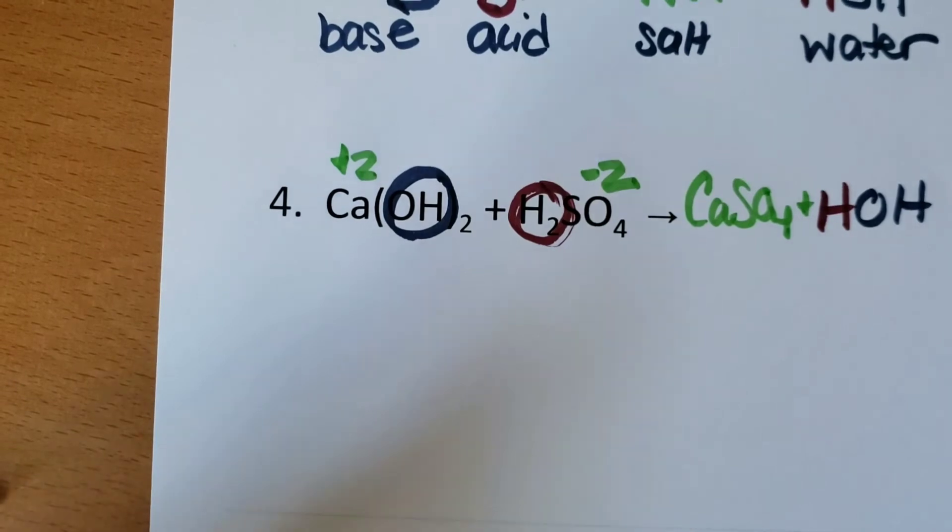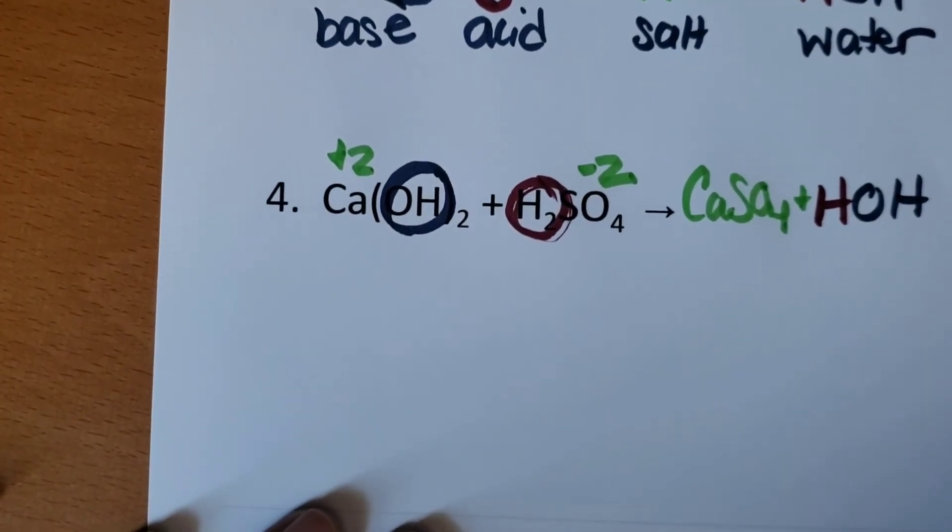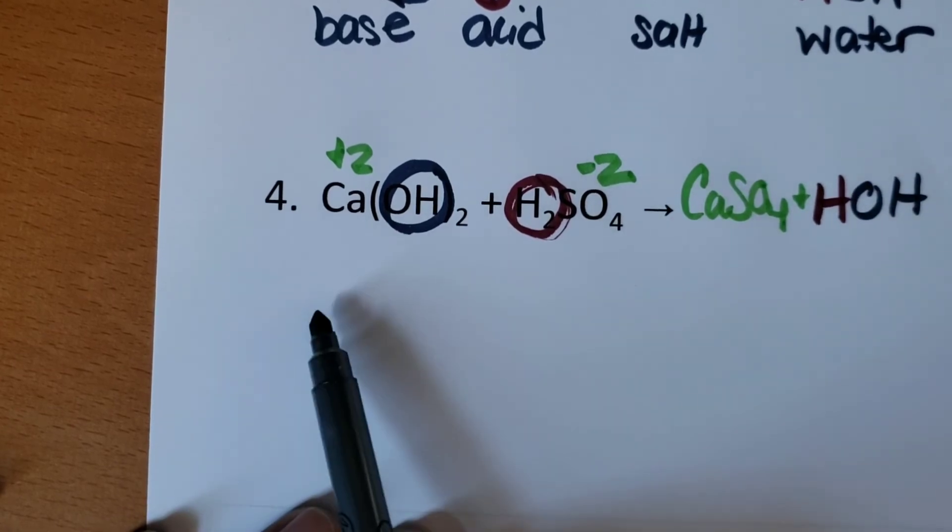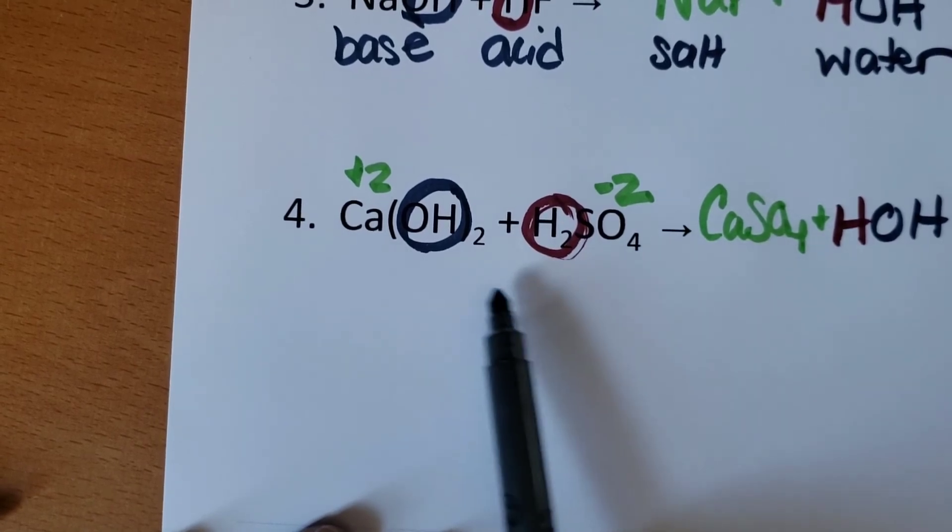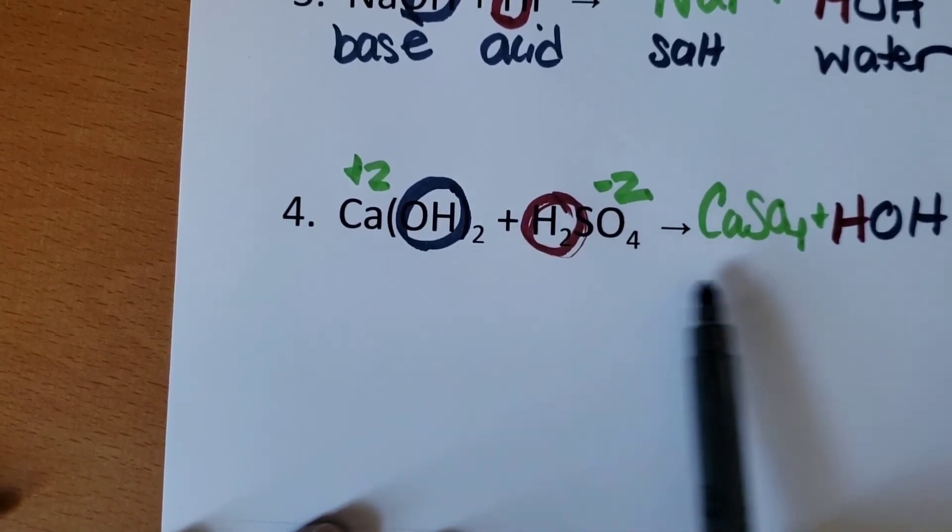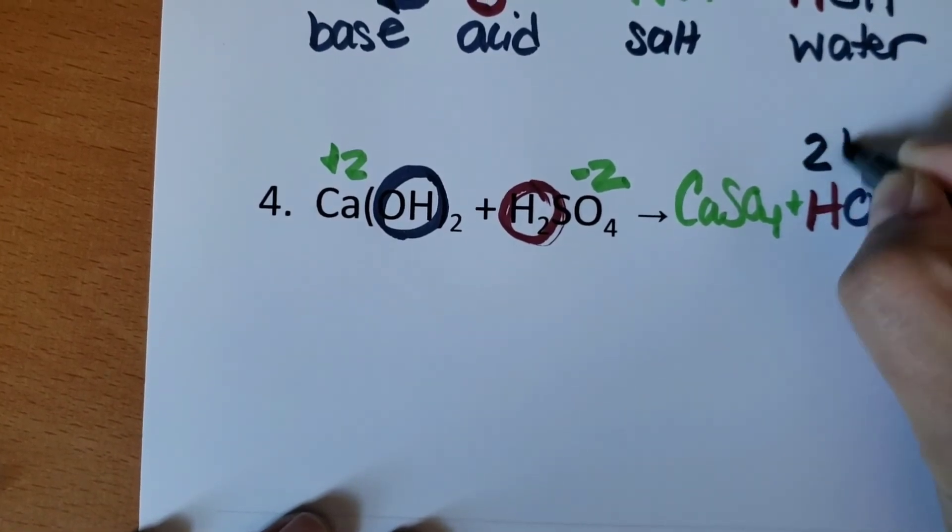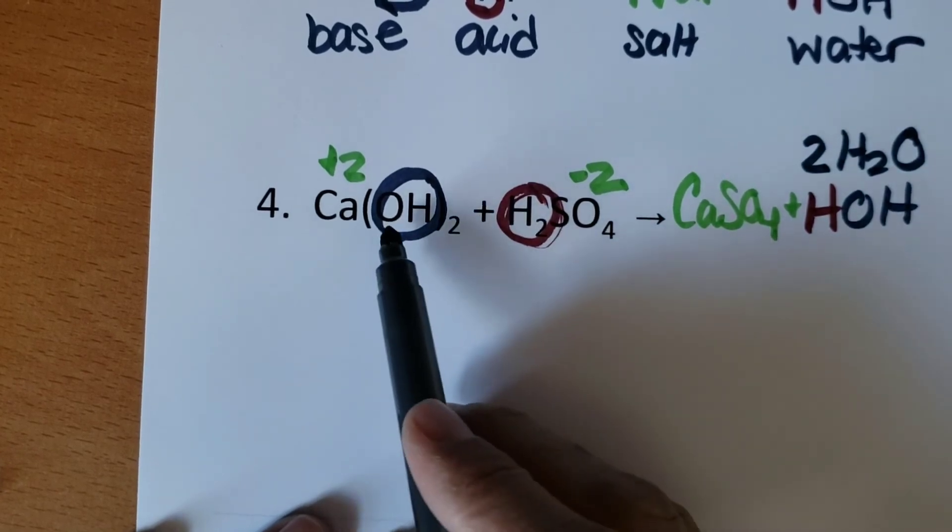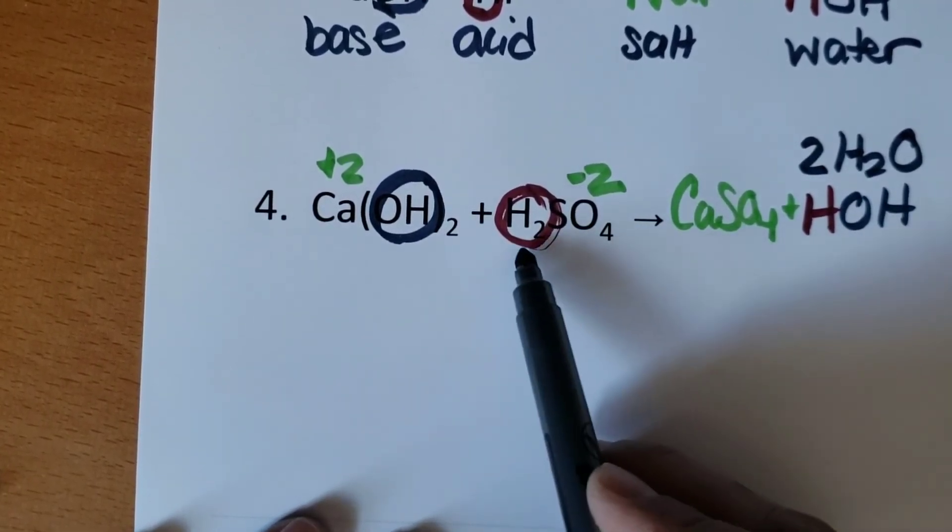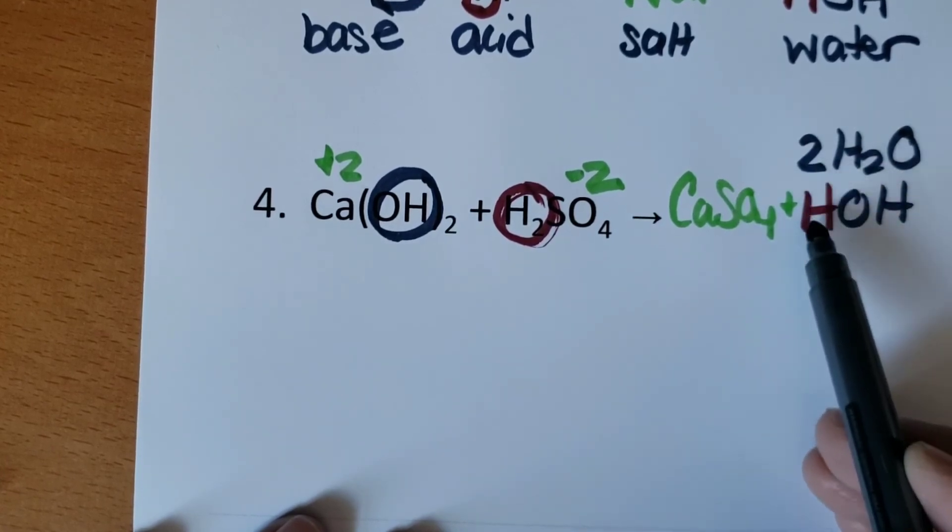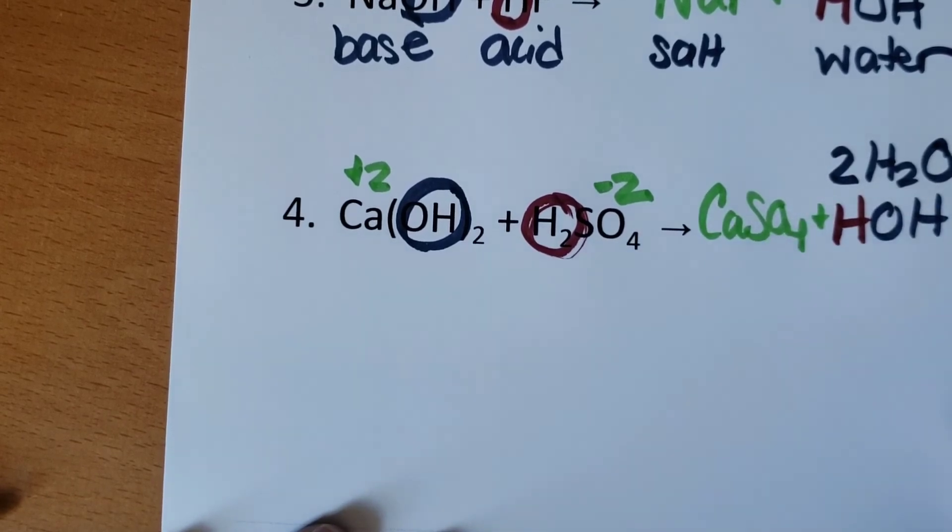And the only thing that is really left to do here is to balance. So remember, we balance to make sure that the same number of atoms are on each side. Here, I have one calcium and one calcium. So calcium is good. But I have two OHs here and only one. So I should add a coefficient of two in front of my water. That two makes it so I have equal numbers of OHs. I have two hydrogens and two hydrogens with this coefficient.